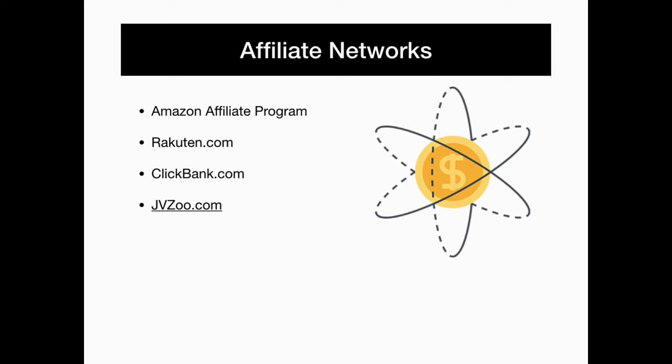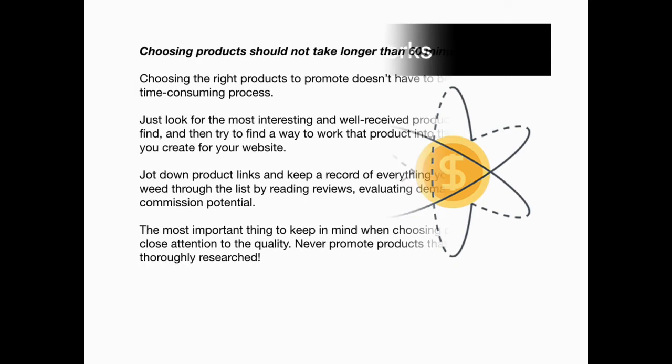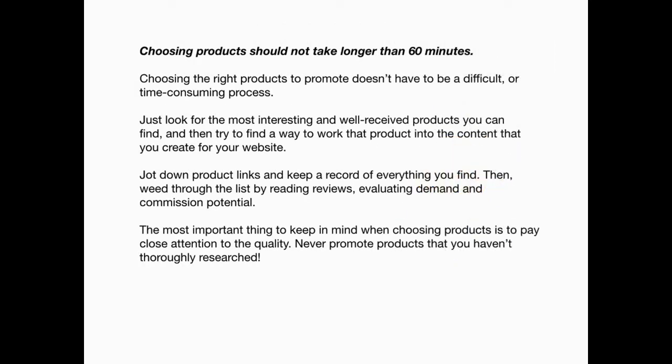Choosing an affiliate network: start with Amazon affiliates program, Rakuten.com, Clickbank.com, and jvzoo.com. Choosing products shouldn't take longer than an hour. Just look for the most interesting and well-received products and find a way to incorporate those into high-quality content. Record everything you find, then weed through the list by reading reviews, evaluating demand, and commission potential.